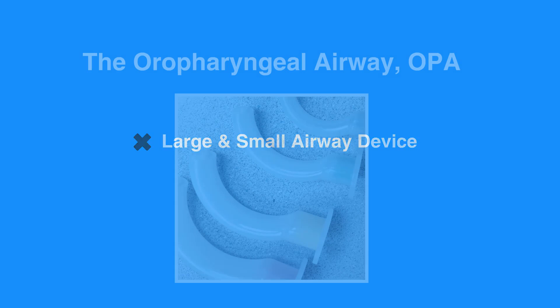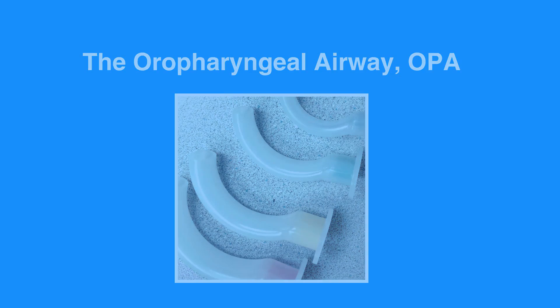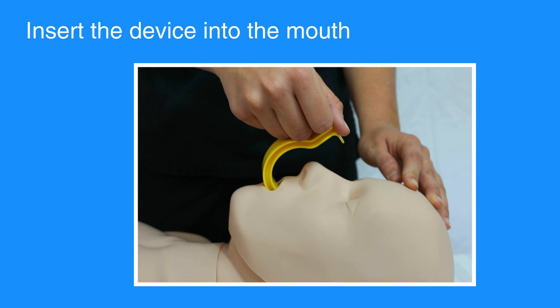To insert an oral pharyngeal airway, or OPA, first clear the mouth of blood and secretions with suction if possible. Place the device at the side of the individual's face. Make sure to choose a device that extends from the corner of the mouth to the earlobe. Insert the device into the mouth so the point is toward the roof of the mouth or parallel to the teeth.